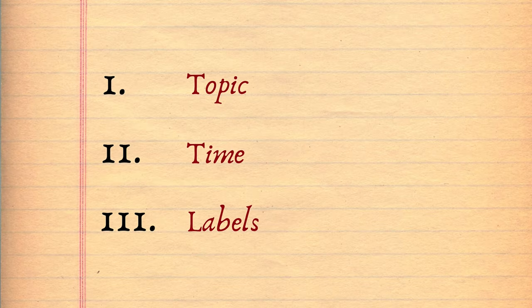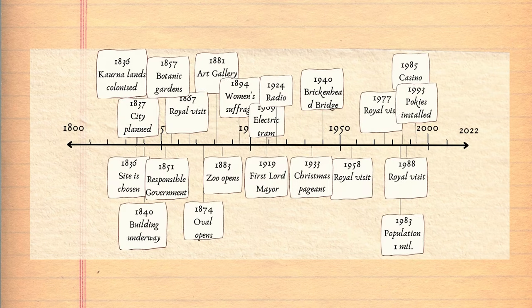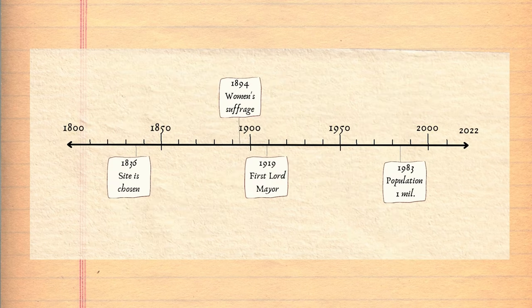The third thing that makes a really great timeline is the way that you label it. You should only be including key events and all of those need to be correctly dated and correctly labelled. Also make sure that you're not including too many events or too few. Try not to include minor details or events with less significance, but stick to the ones that had key impacts on that history.